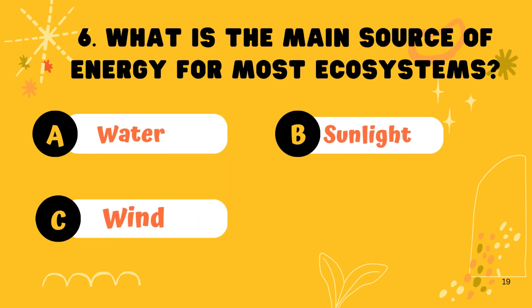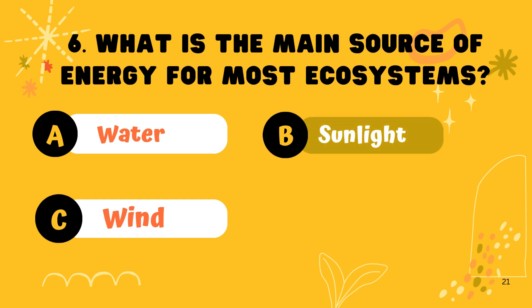Question 6. What is the main source of energy for most ecosystems? Option B: Sunlight.